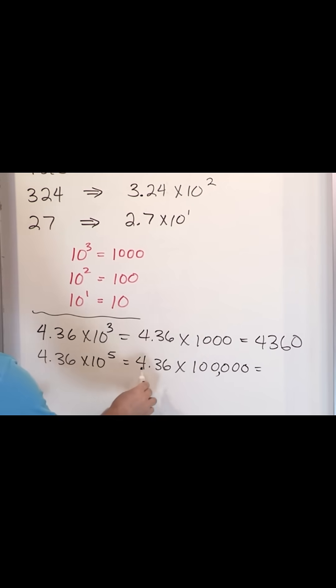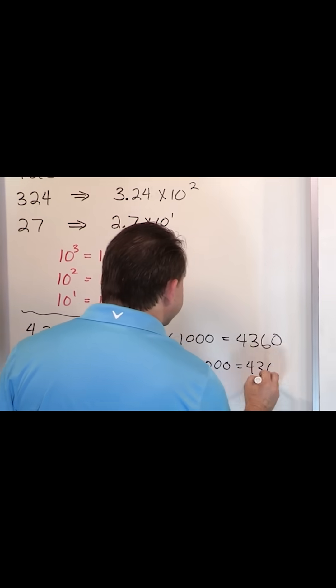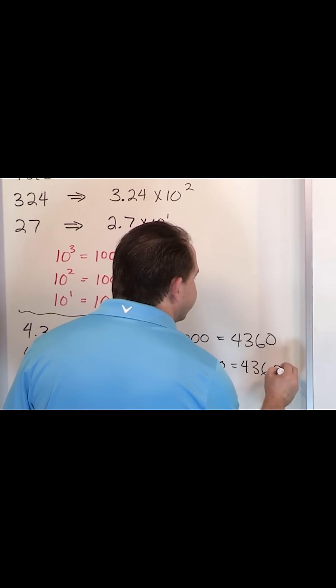So then what would you have? You would go one, two, and then I have to go three, four, five. I need to add some more zeros. So it's going to be 436,000.